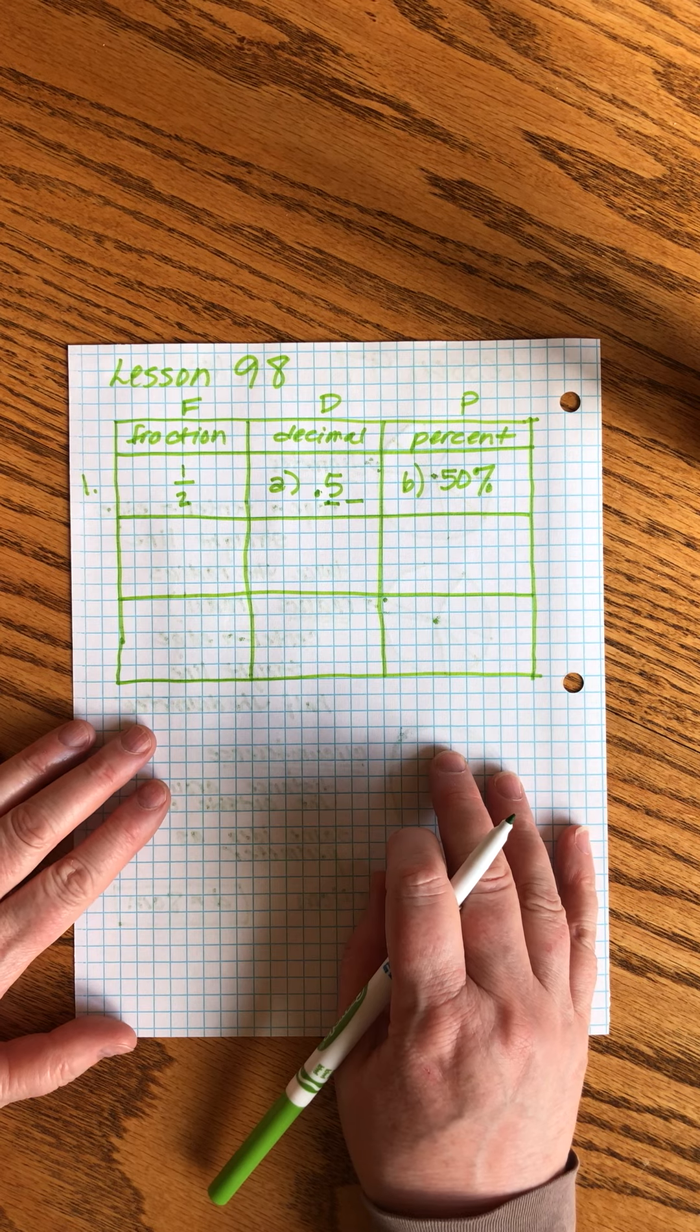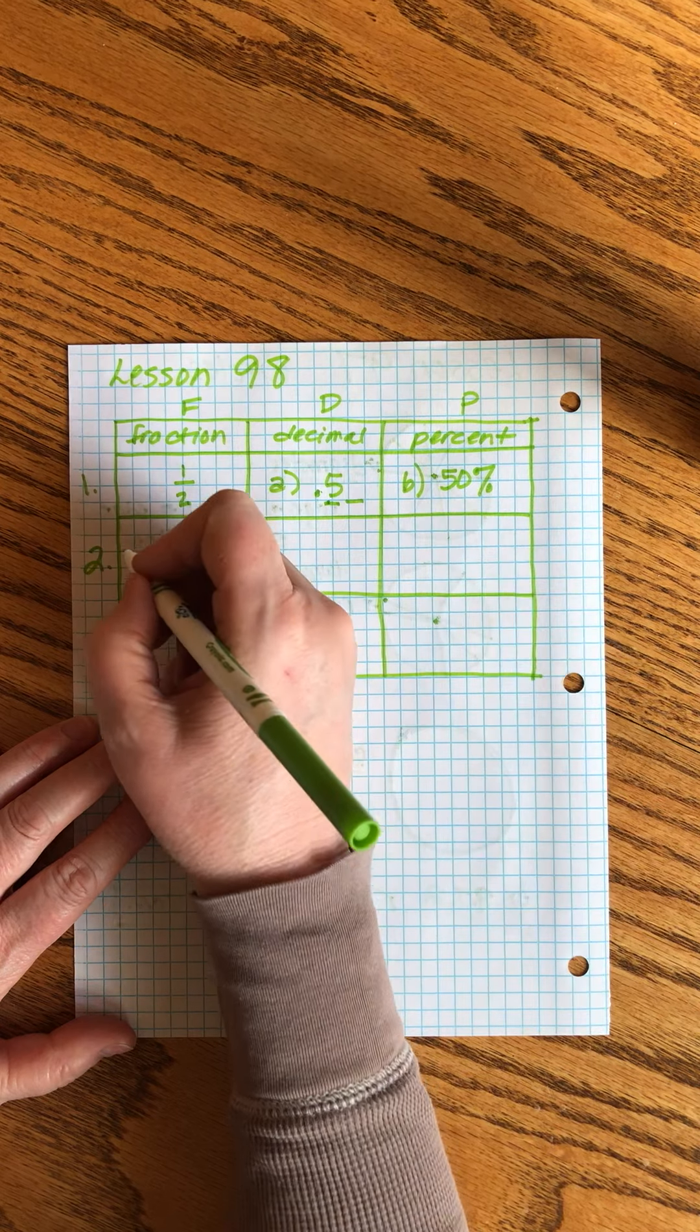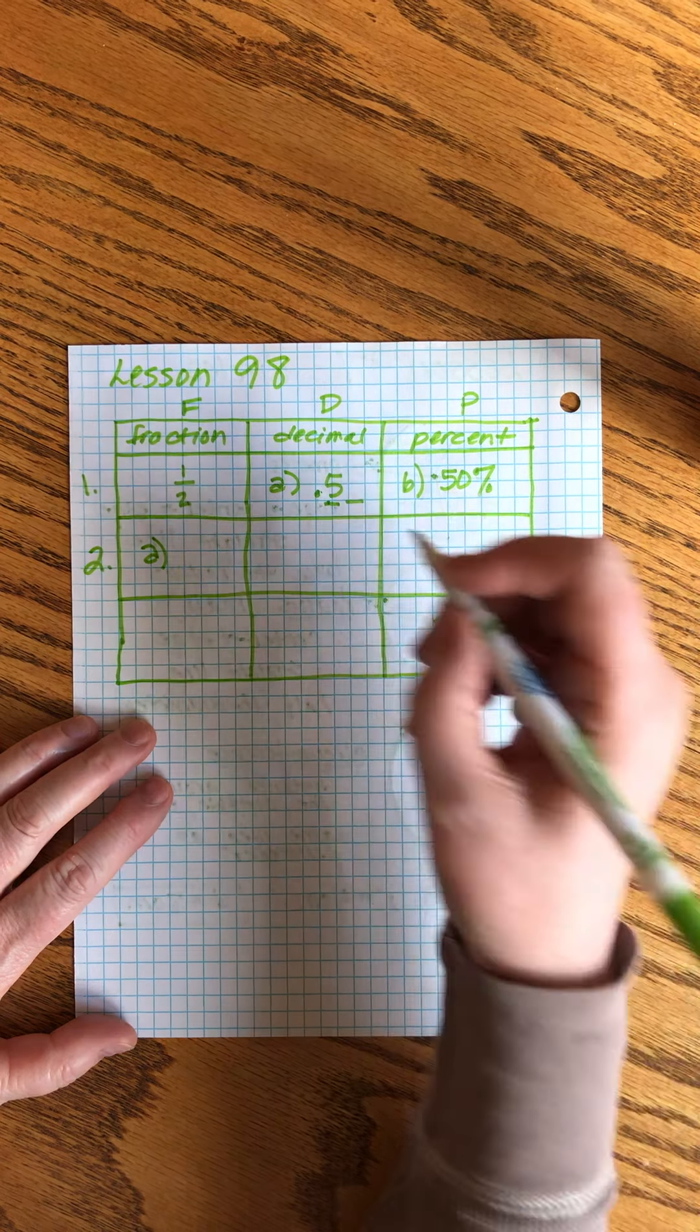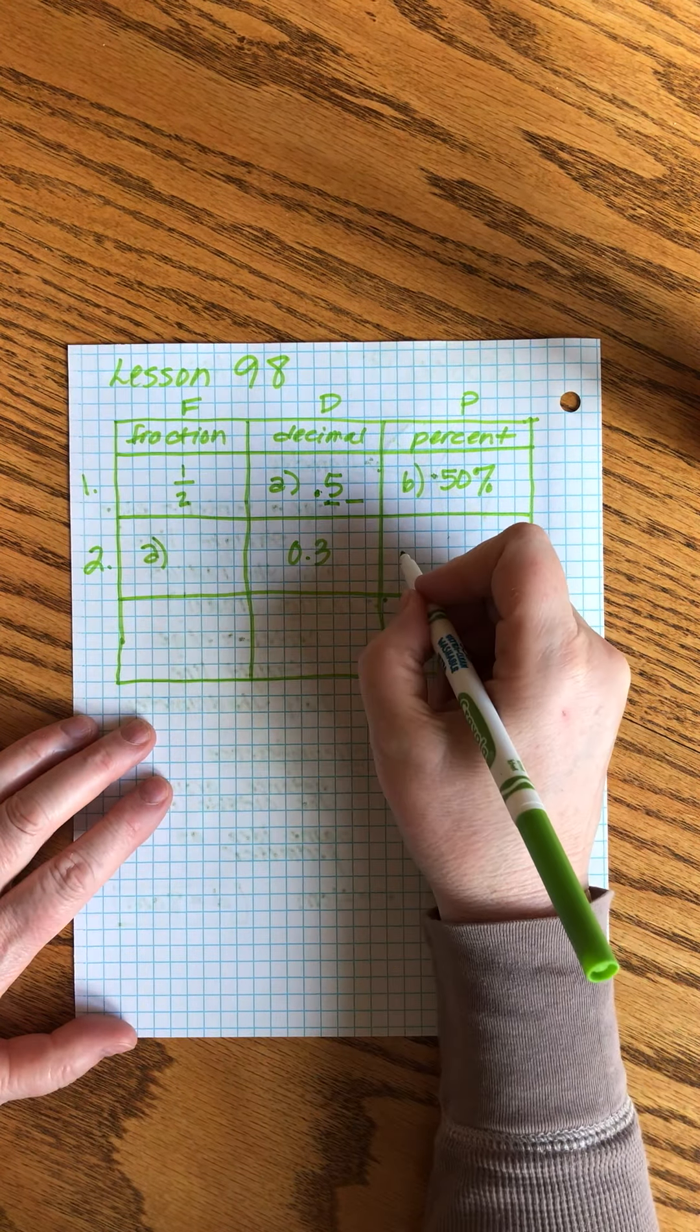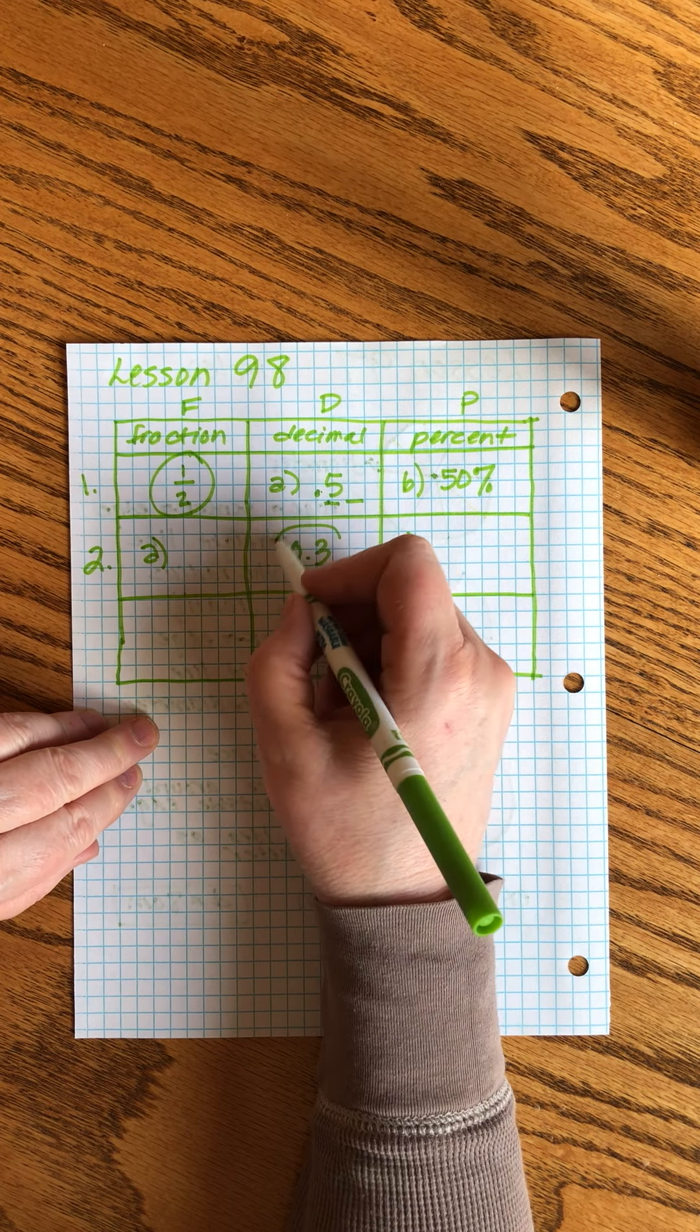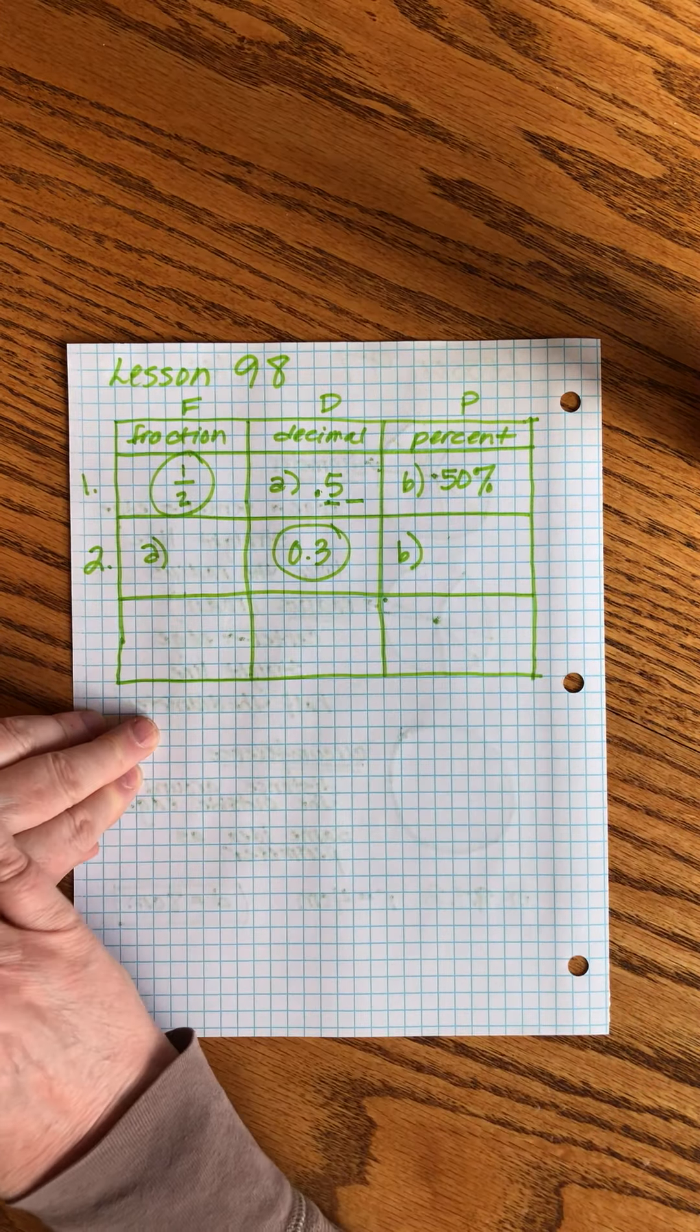Now we go to the second row. This one doesn't have any information in the fraction column but it's got 0.3 here, and then we have to figure out the percent. The moral of the story is that John can give us starting information in any one of the three columns and then we have to figure out the other two.